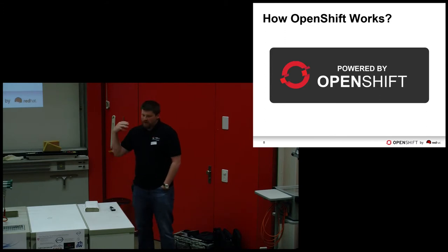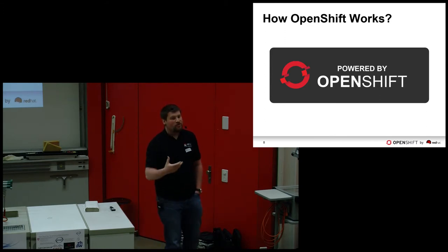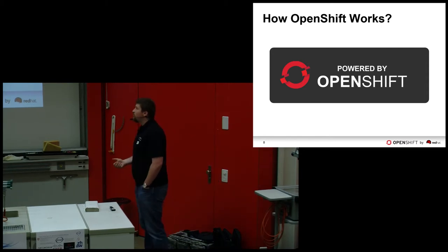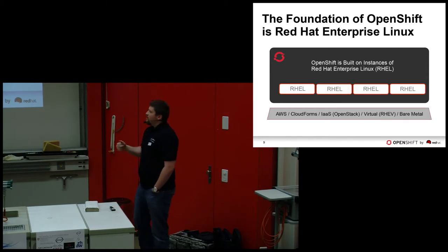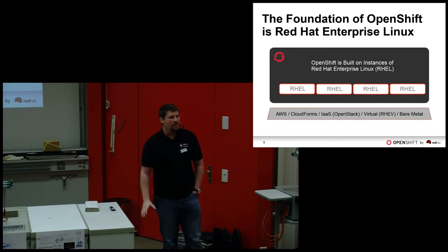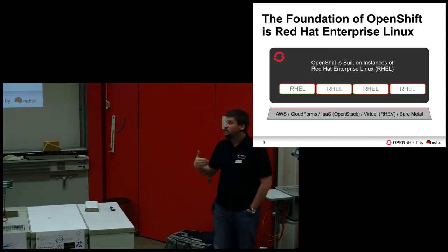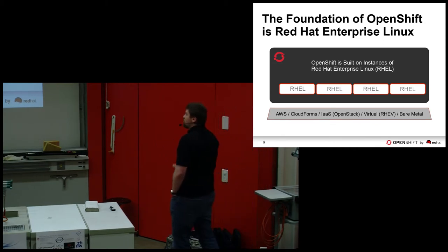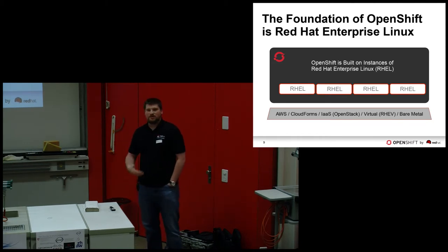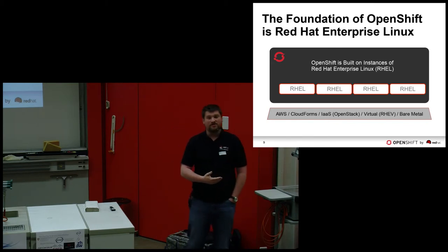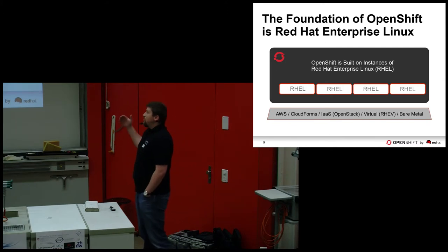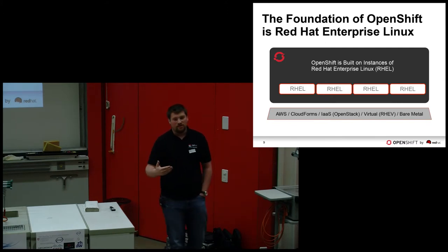I would like to deep dive inside OpenShift and show you how it really works, what it is built of. At the very bottom there is some infrastructure — OpenShift is agnostic to that. It only requires you to deploy a virtual machine or bare metal somehow. That machine should be Red Hat Enterprise Linux for the Enterprise version or Fedora for the community version, and on top of that we build the cluster of the OpenShift deployment.